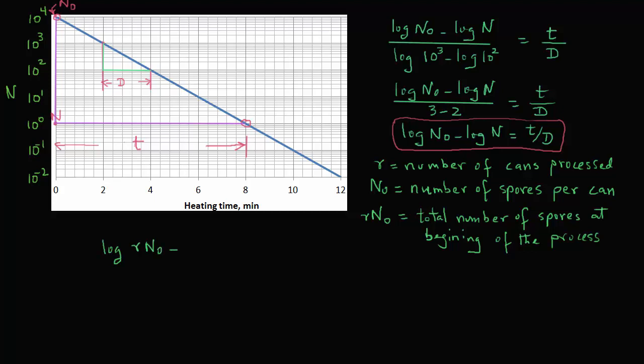Then log rn0 minus log rn, log of rn0, representing the initial population, minus log of r times n, the final population. And we will also replace time t with a symbol f, where f is the total time of heating. So we have f divided by d.